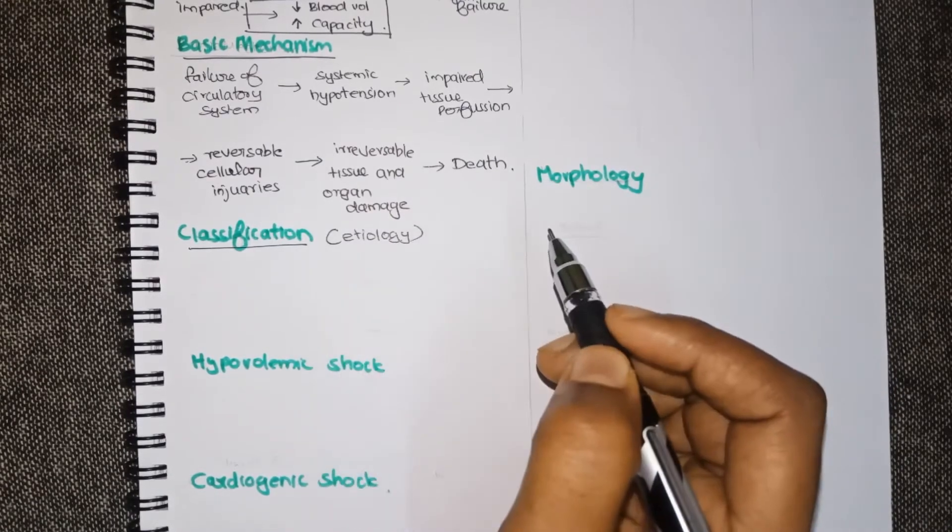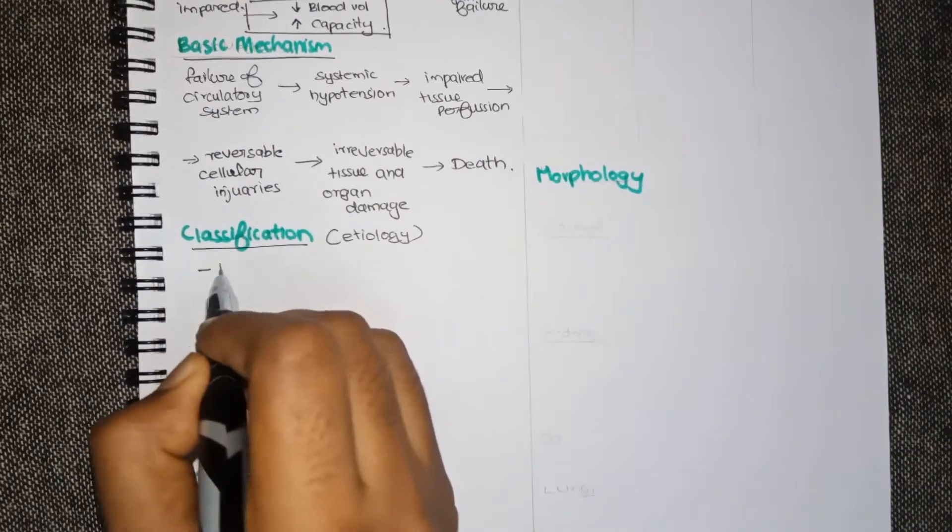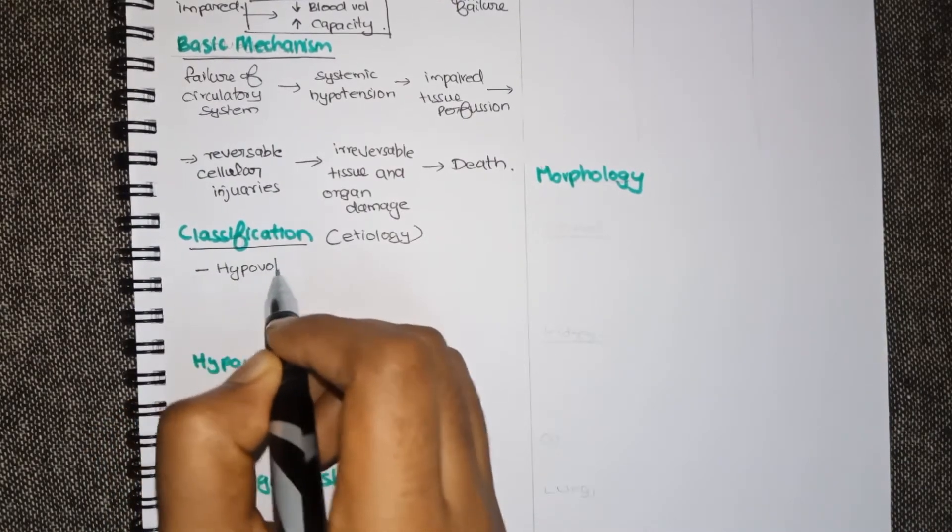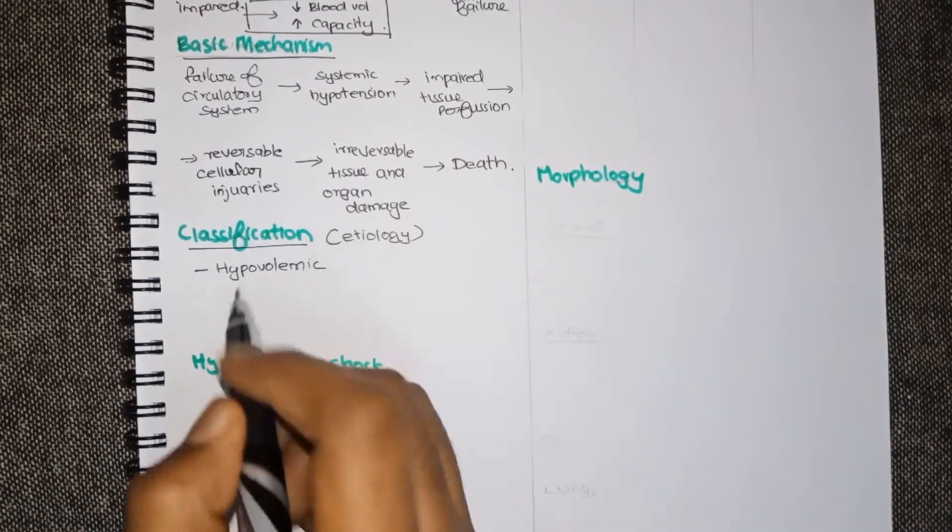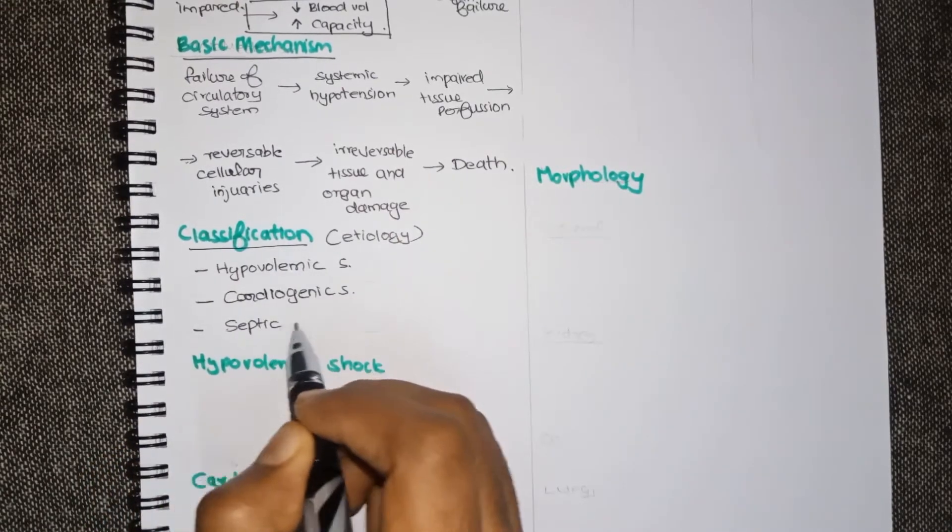Classification is based on the etiology or the underlying cause. Mainly there are three types of shock: hypovolemic shock, cardiogenic shock and septic shock.